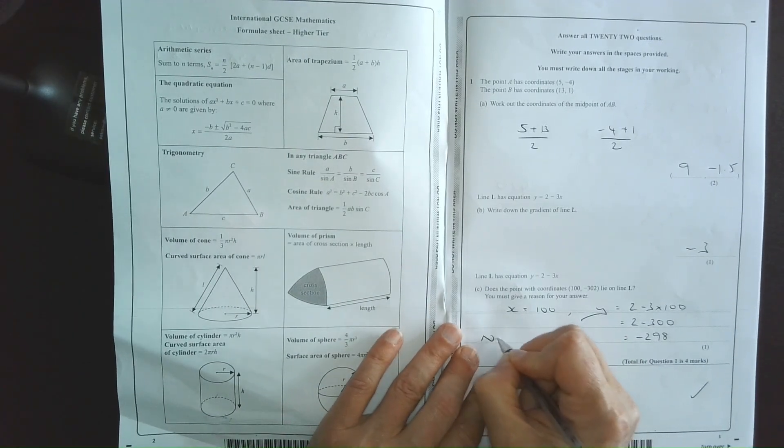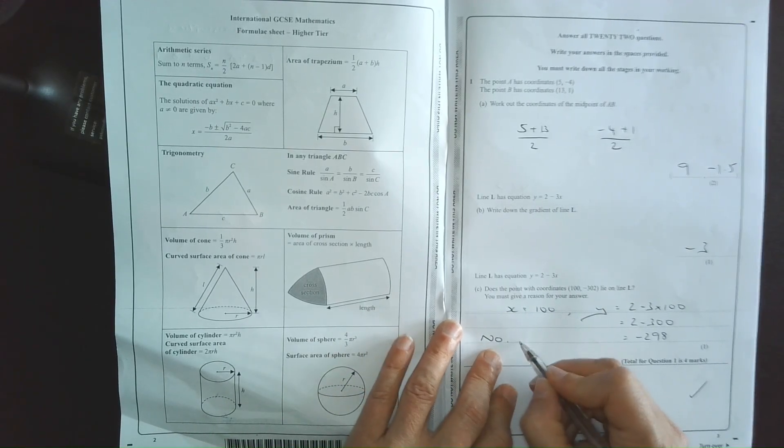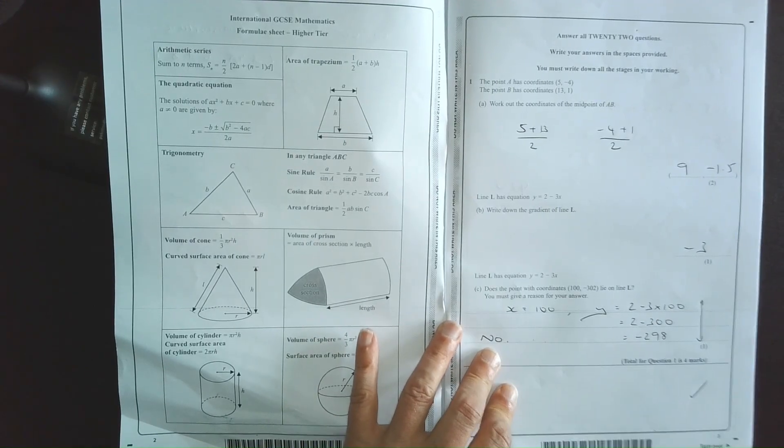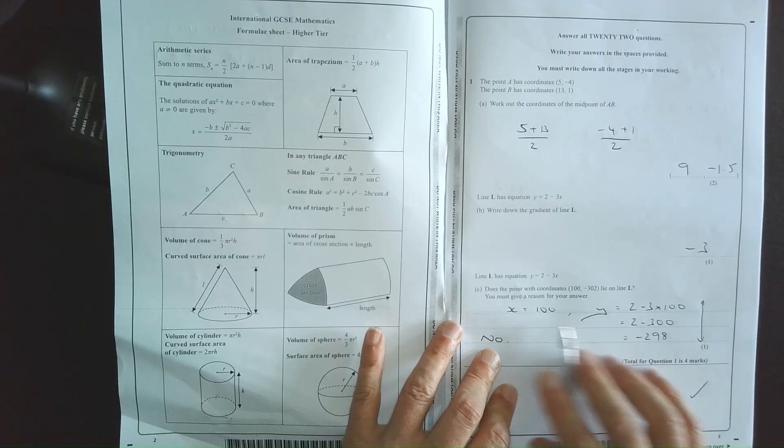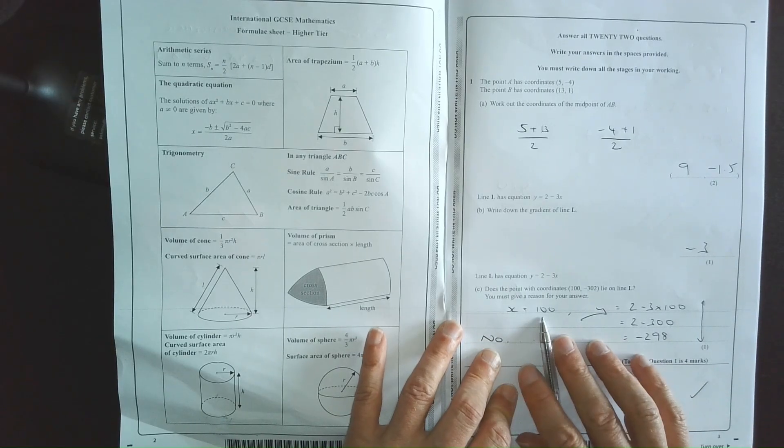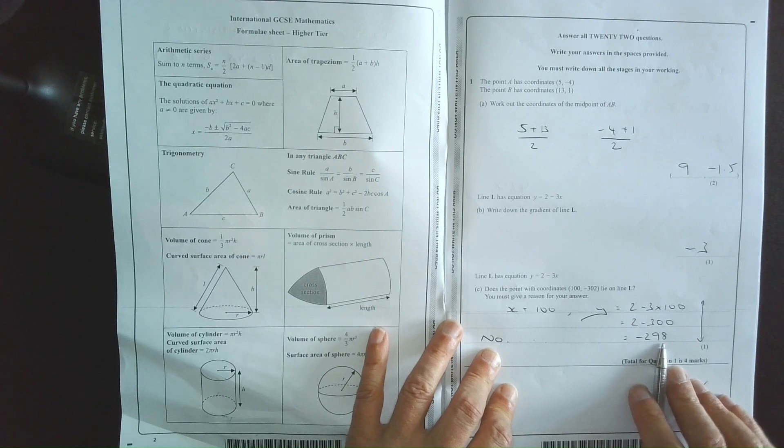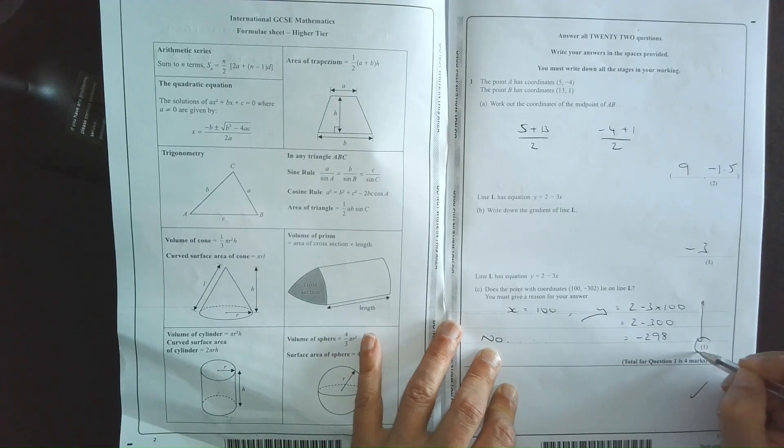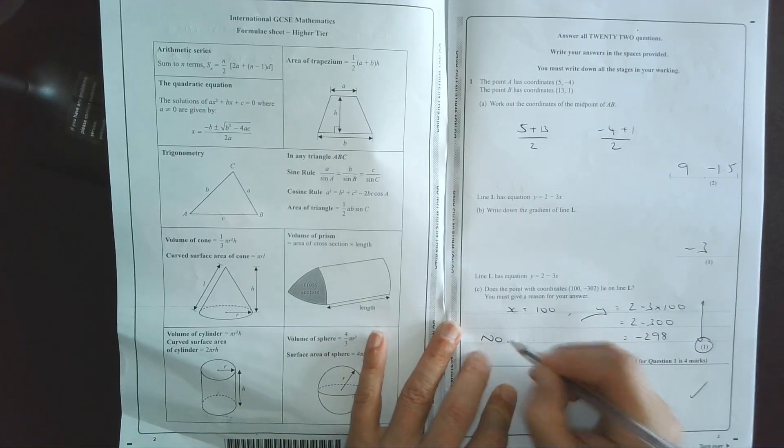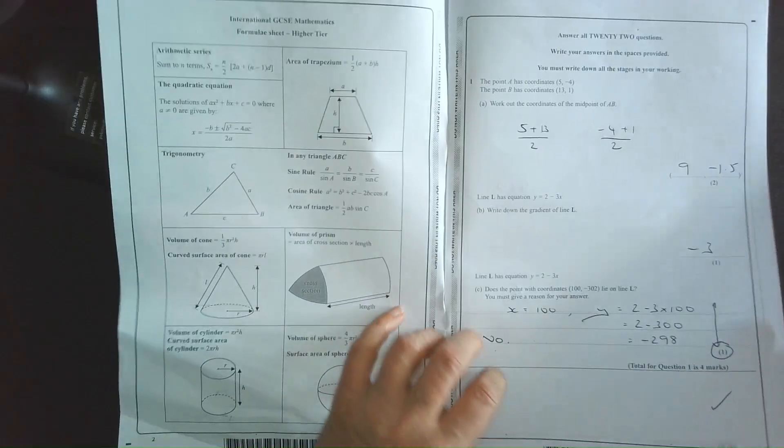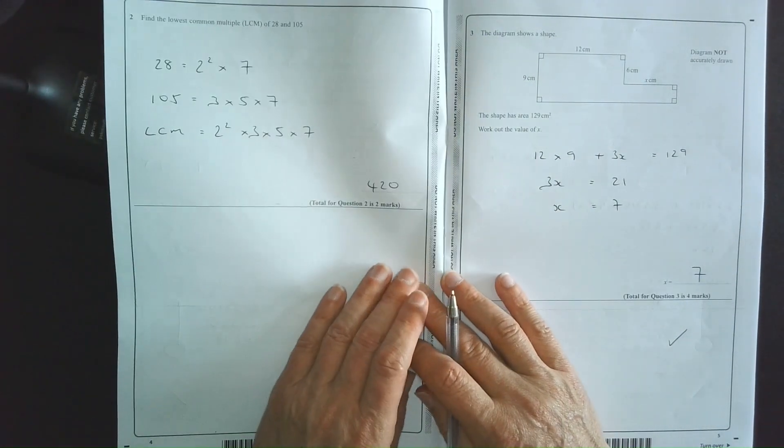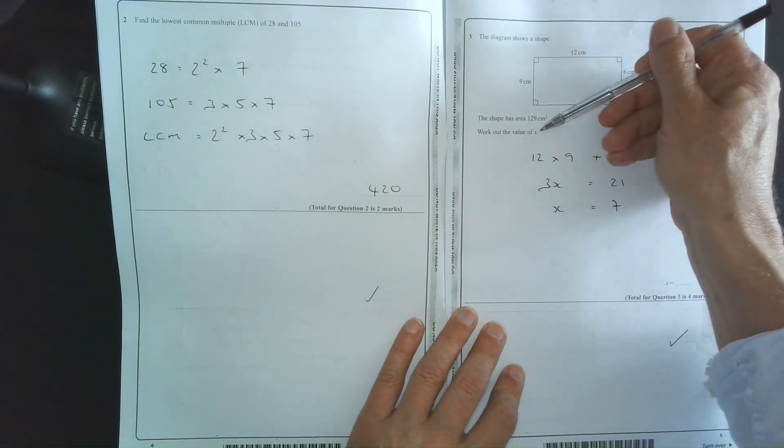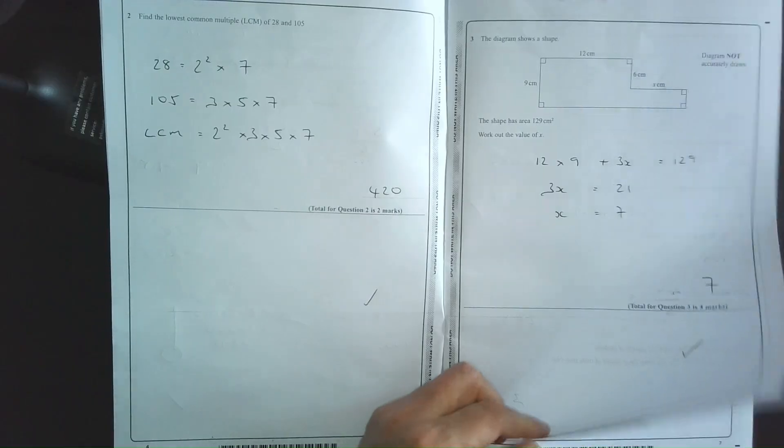So the answer must be a yes or a no. So I need to have said no, and preferably, no, the point does not lie on the line. Now, this might be okay for my reason, especially if it's only worth one mark. But if it were worth any more, then I would explain in words that when x is 100, y is minus 298, and not minus 302. There's an example of where I would have scored 0 out of 1, because I did not answer the question. The question required a yes or a no.